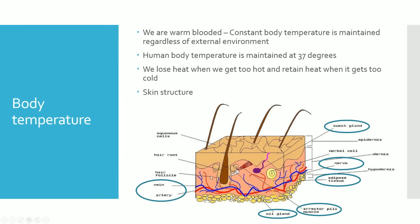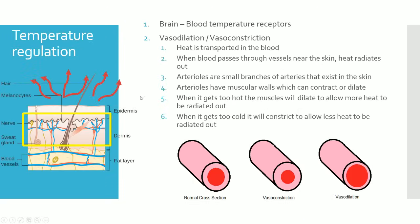Make sure you understand the basic structure of the skin and can label or draw it from scratch. In terms of temperature regulation, the arteries branch out into arterioles that extend into the skin and sit close to the surface. When blood is carried through these arterioles, heat is radiated out and passed through the skin — which is why you can see heat rays shown at the top of the skin in the diagram.